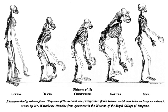Chapter 1, On the Natural History of the Man-like Apes, contains a summary of what was known of the great apes at that time. Chapter 2, On the Relations of Man to the Lower Animals, contains most of the controversial material and is still important today.